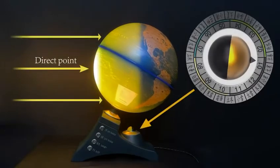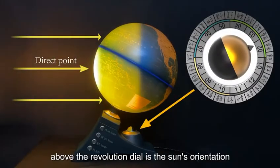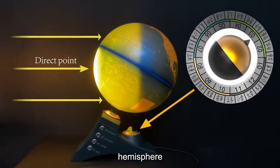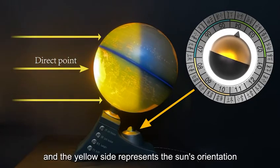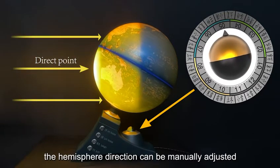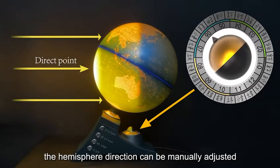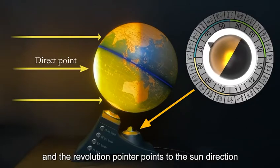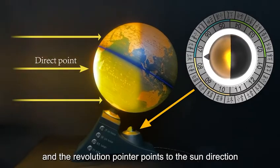Above the revolution dial is the Sun's orientation hemisphere. The yellow side represents the Sun's orientation, and the hemisphere direction can be manually adjusted. The revolution pointer points to the Sun direction.